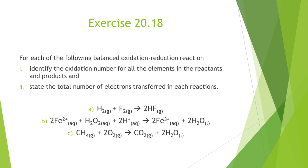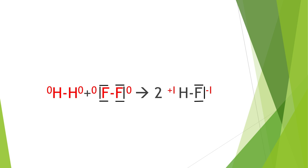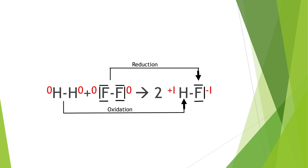We have three reaction equations here. In the first one, a hydrogen molecule reacts with a fluorine molecule to form two hydrogen fluoride. The oxidation number of hydrogen and fluorine in their molecular forms is zero. In the product, the oxidation number of hydrogen is +1 and of fluorine is -1. Fluorine gains one electron and hydrogen loses one. Gaining electrons and a decrease in oxidation number corresponds to reduction; losing electrons and an increase corresponds to oxidation. The total number of transferred electrons is two.